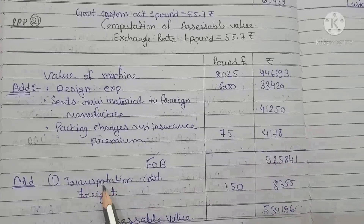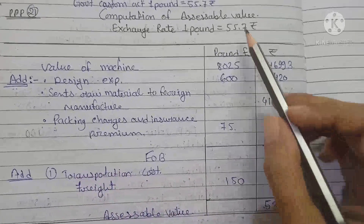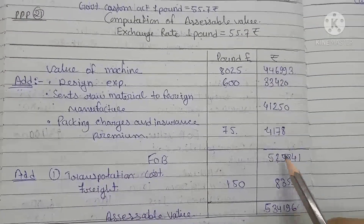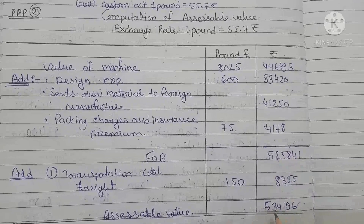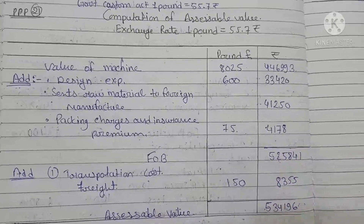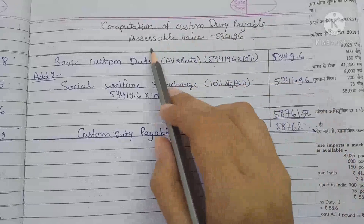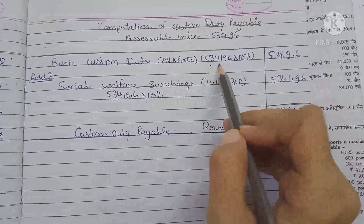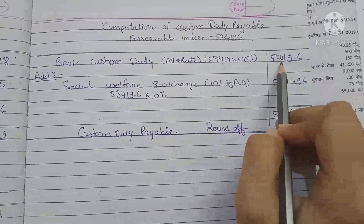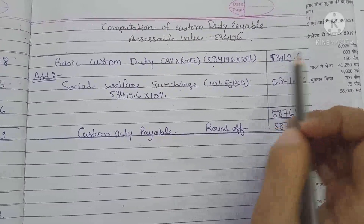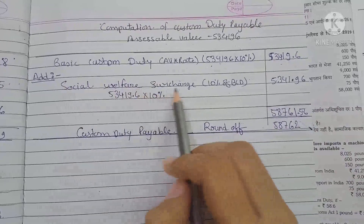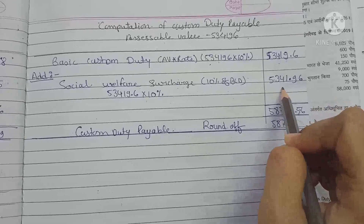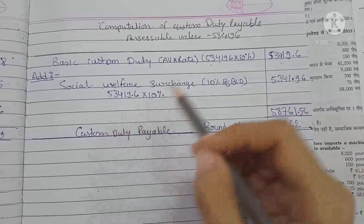We add transportation cost: freight $150 into ₹55.7 = ₹8,355. Total comes to ₹5,34,196, which is the assessable value. Computation of customs duty payable: basic customs duty at 10% of assessable value ₹5,34,196 = ₹53,419.60.